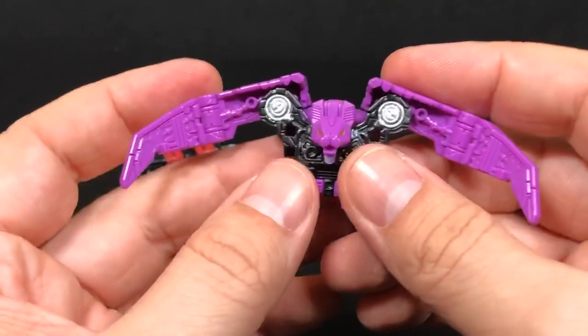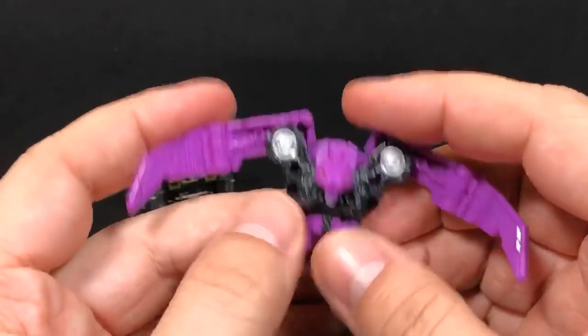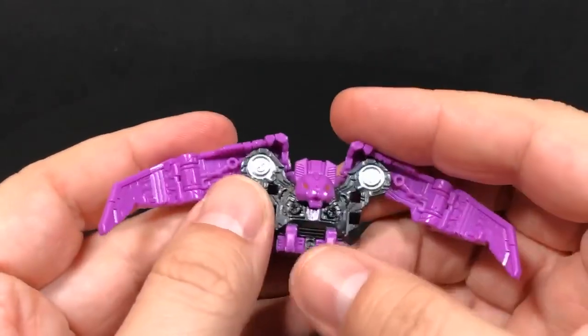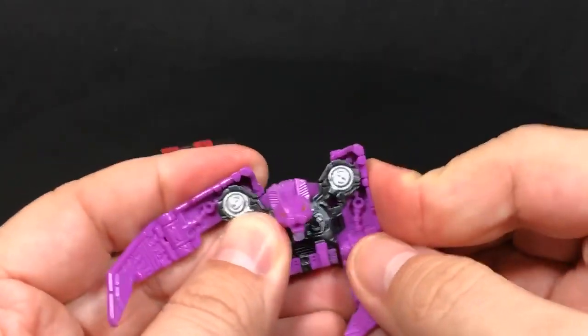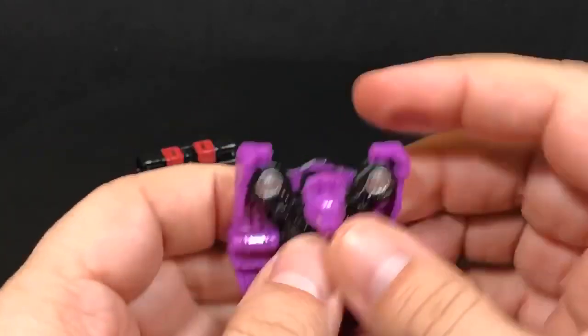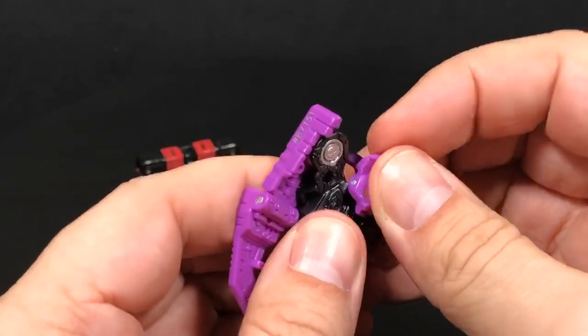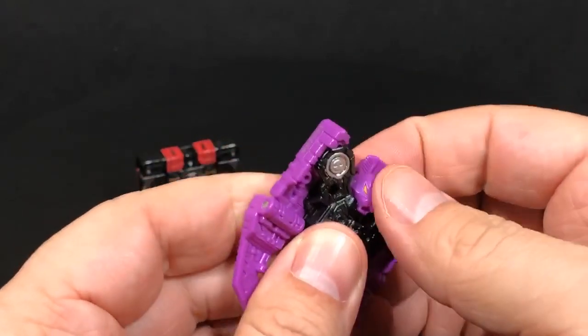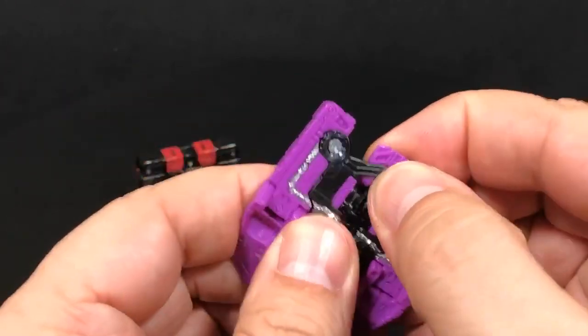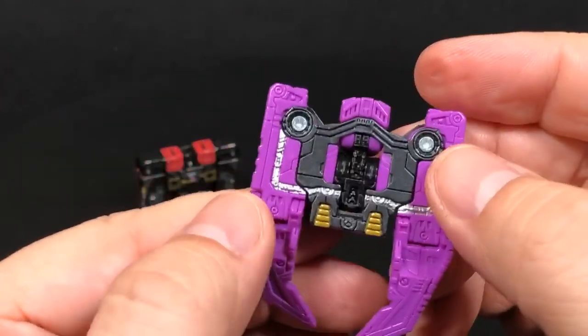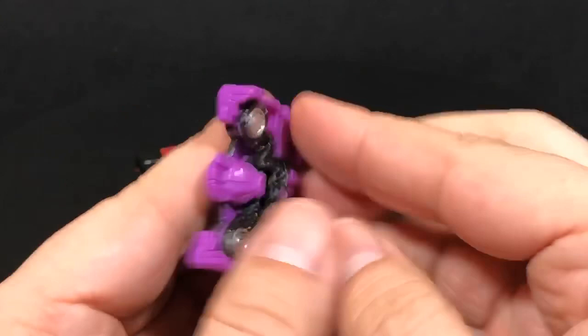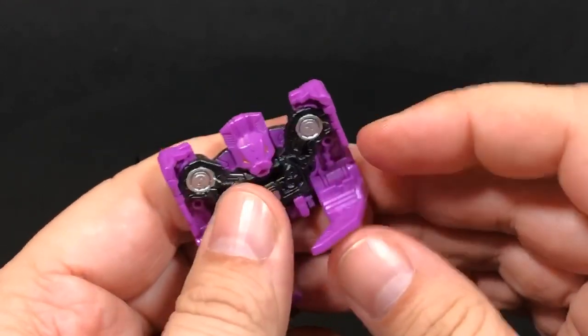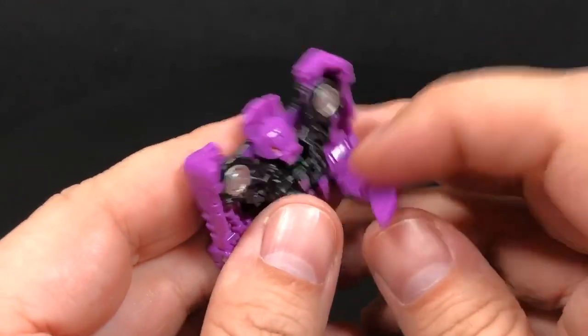Now for Rat Bat. He's fairly easy, he just has a couple of steps. We'll flip up his feet and then bring down the wings. Take the head - it's on a two-part joint so that it can fold up just like that. You'll see that it goes all the way in there once it's tabbed in.